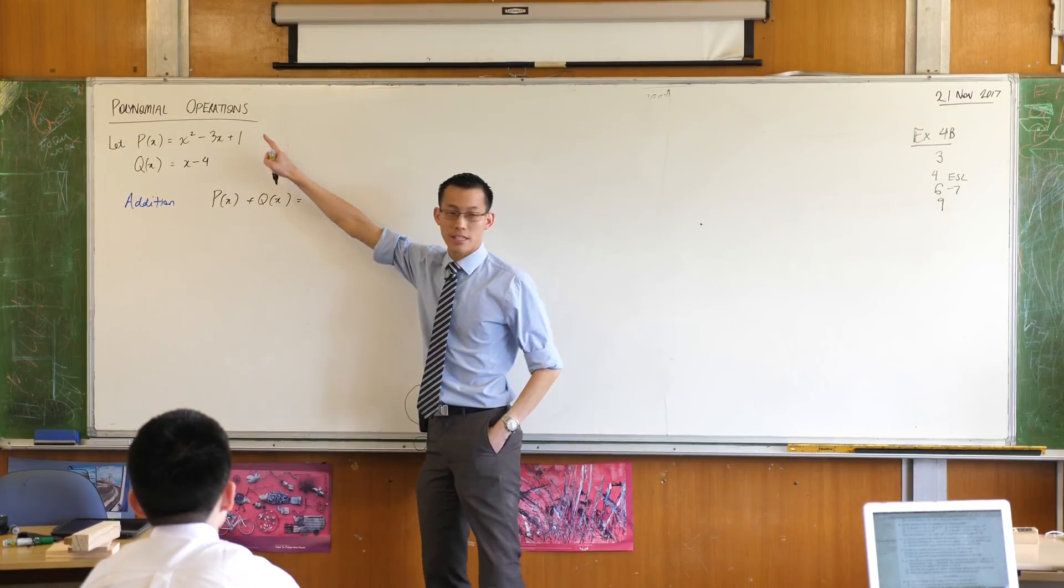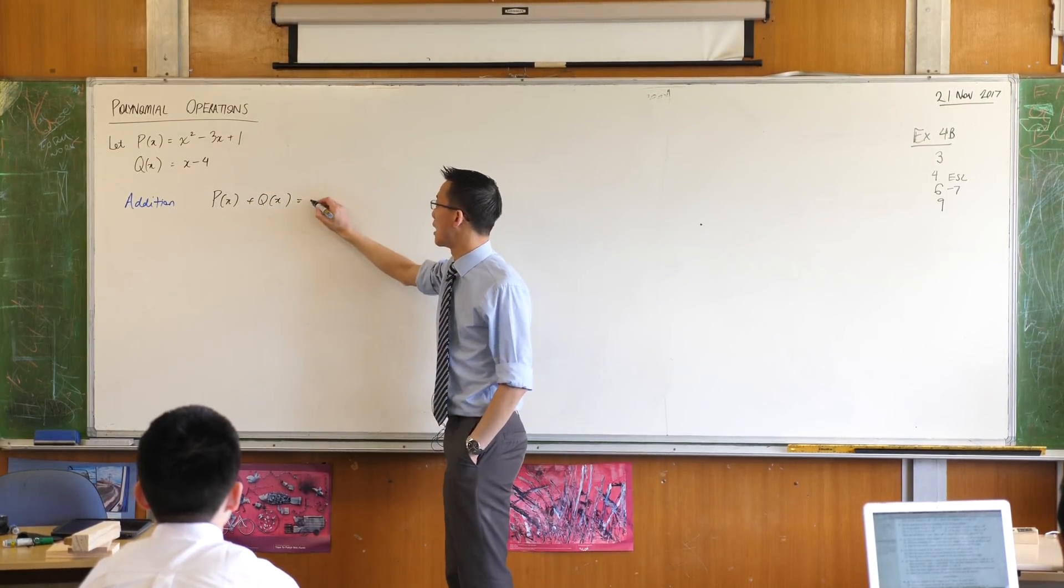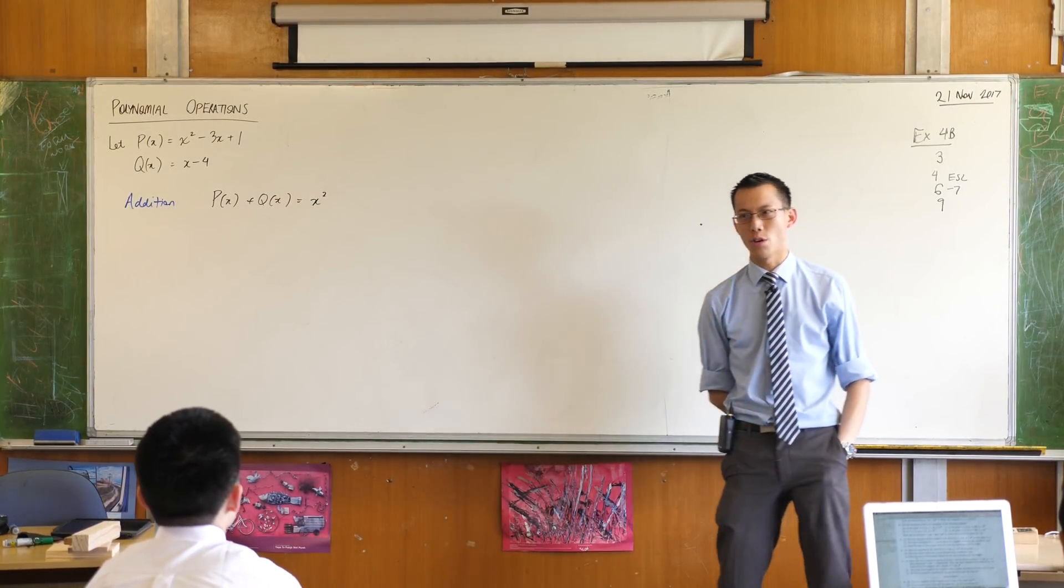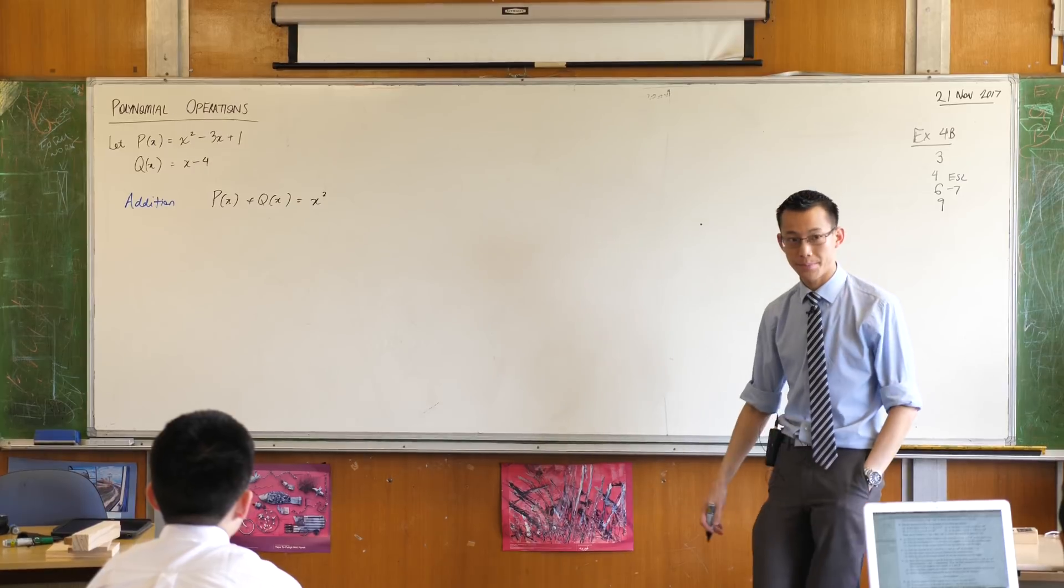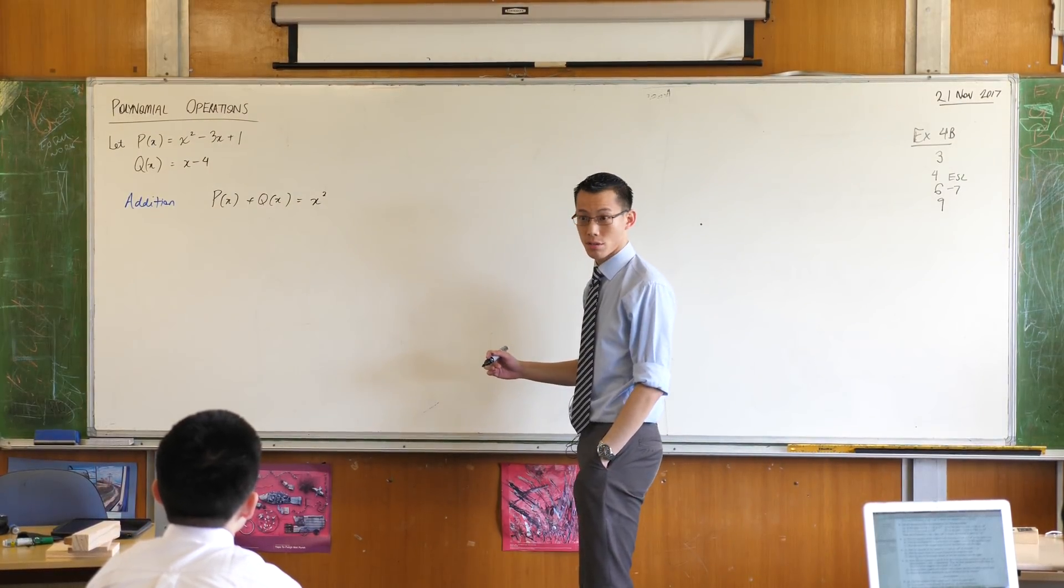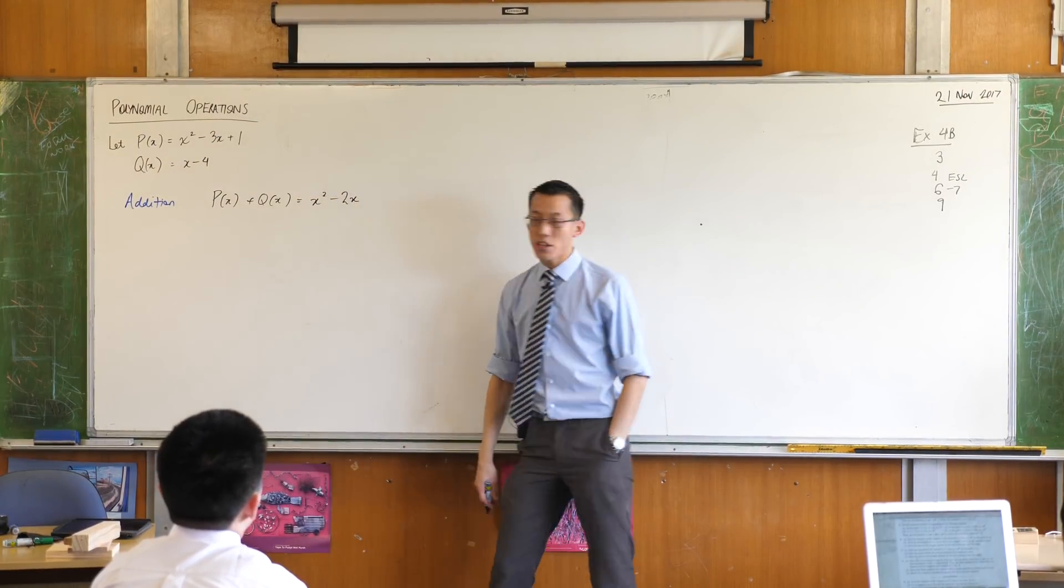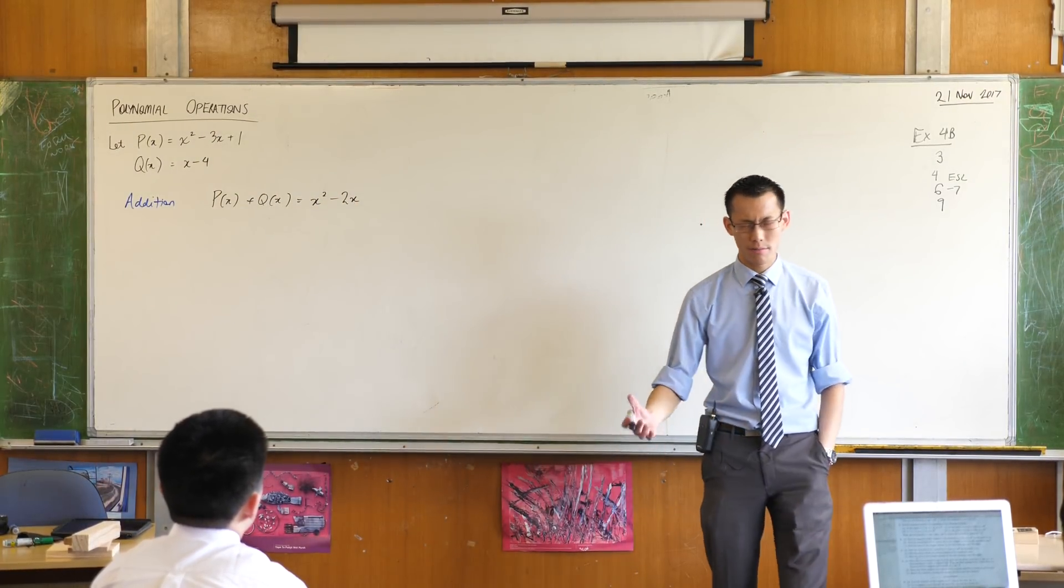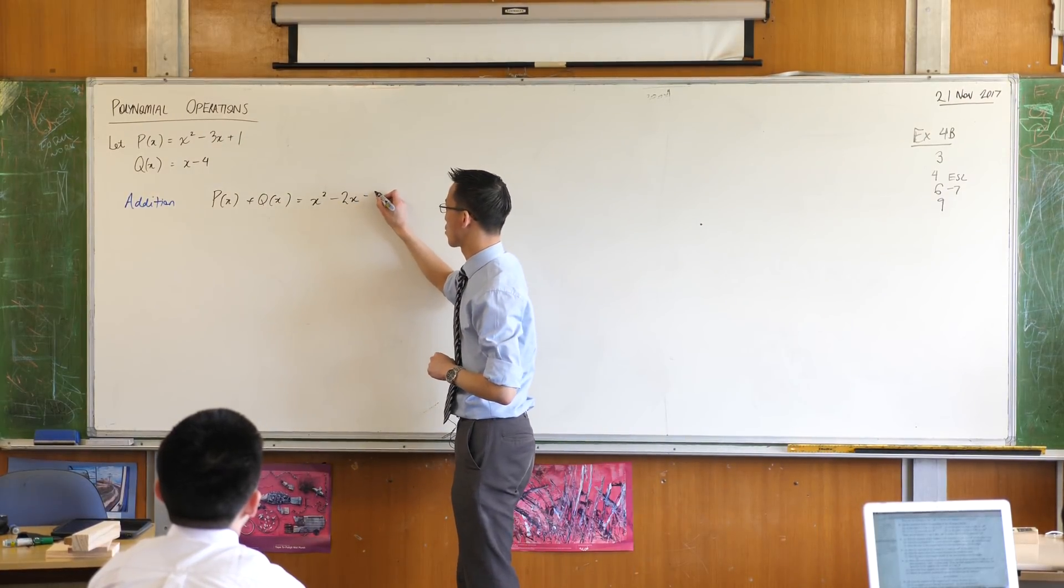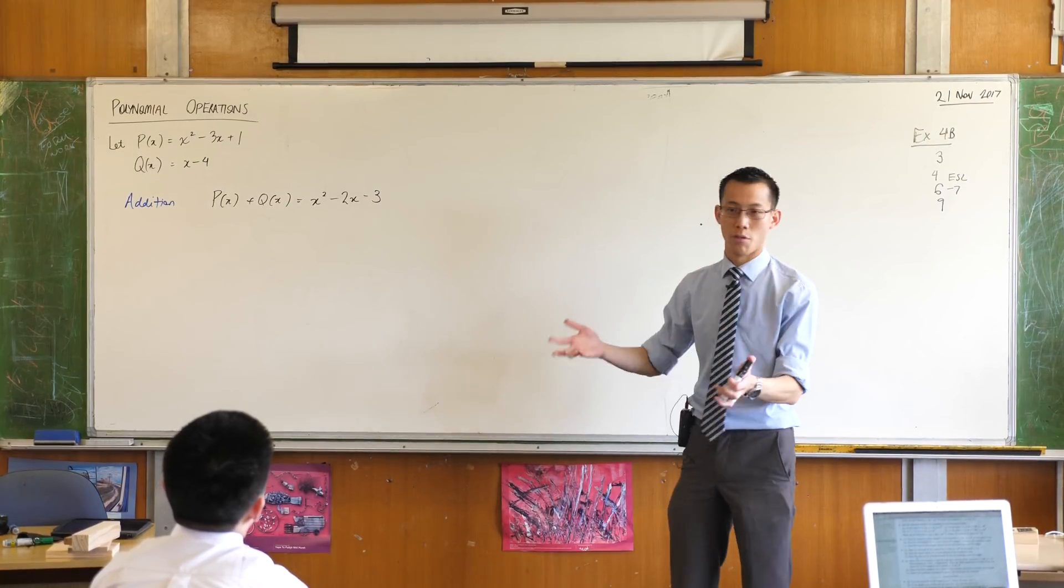For example you can see that there are only x squared terms in p, so I'm just going to write the x squared term there. There are x terms in both p and q, so when you collect like terms, what do you get? Minus 2x. Good. And then when you look at the constant terms, plus 1, minus 4, looks like we're going to end up with minus 3. So I've added these two polynomials, no big dramas.